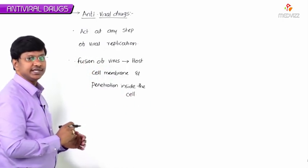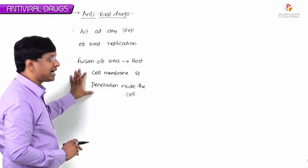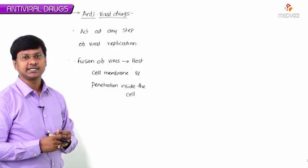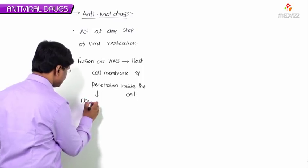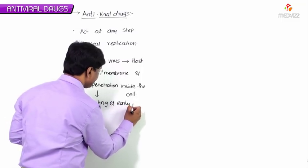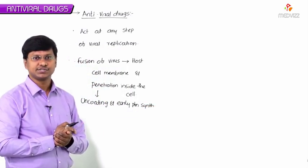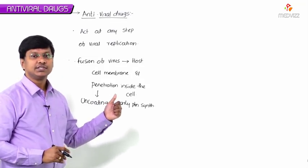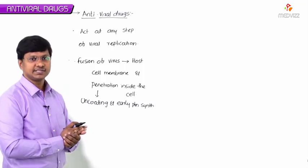After fusion and penetration inside the cell, uncoating occurs and early proteins are synthesized. So the next step is uncoating, followed by early protein synthesis. After that, nucleic acids are synthesized.